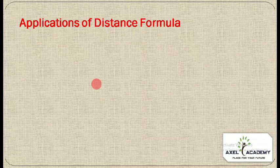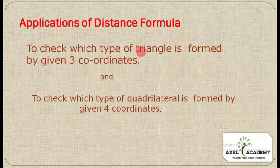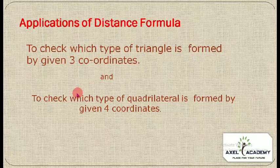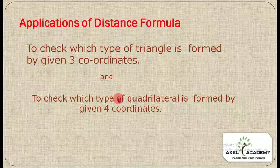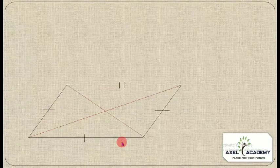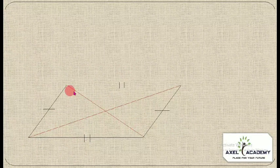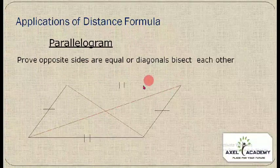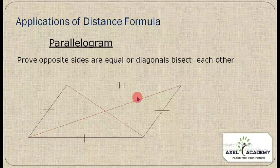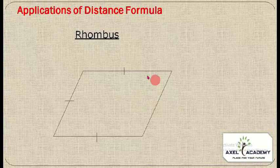The distance formula has several applications. It can be used to determine what type of triangle is formed by three coordinates, and also what type of quadrilateral is formed by four coordinates. For a parallelogram, if opposite sides are equal and diagonals bisect each other, we can confirm it is a parallelogram.